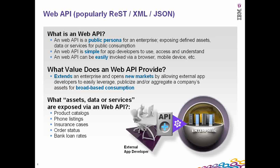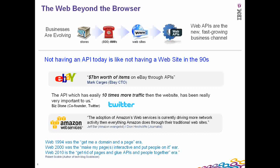So, what can be exposed as a web API? Well, anything that is relevant to business — any asset that you have which has the potential of bringing revenue value to your business, you can consider exposing it as an API. So your product catalogs, your phone listings, insurance cases in the case of the insurance industry, a whole bunch of APIs around order management, order status, and bank loan rates — things like that are what one could consider exposing as APIs.